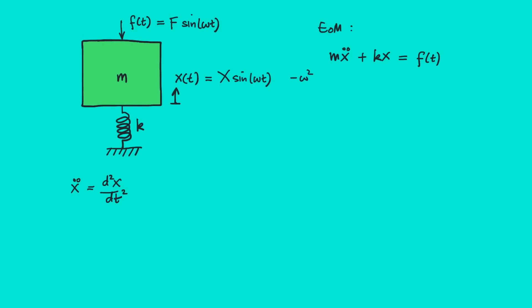And so we will have -ω²mX sin(ωt) + kX sin(ωt) equals F sin(ωt). We can cancel out sin(ωt).